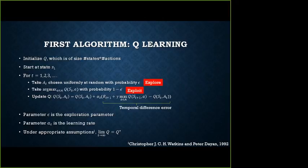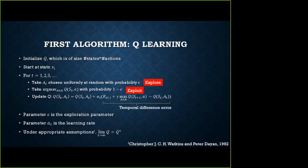Q: How does the exploit step work? In any round T, either you take an action uniformly at random (explore), or — since you maintain a table — at row S_T you have numbers associated with each of the actions, and you take whichever action has the highest value (exploit with probability one minus epsilon). Use the knowledge with probability one minus epsilon, don't use it with probability epsilon. Whatever you do, you collect some reward and update that score in that entry of the table.